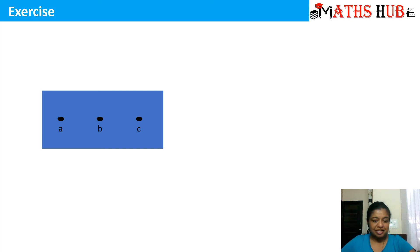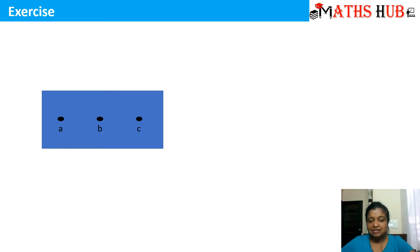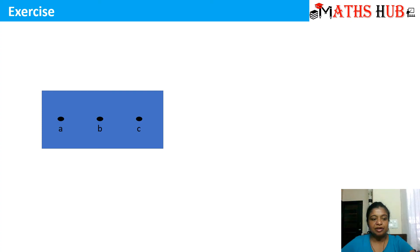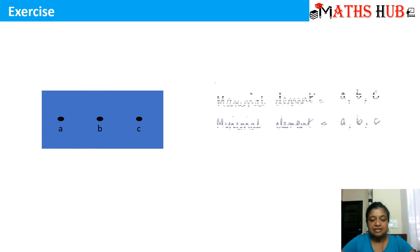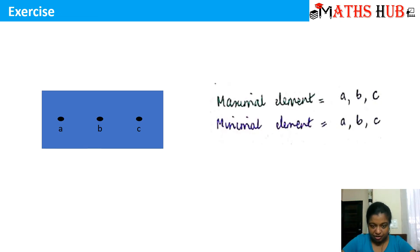This is a very interesting case. There are three dots A, B, and C, and all three are lying at the same level. Nothing is above them, so all three serve as maximal elements. Similarly, nothing is below them, so A, B, and C also serve as minimal elements. For this particular case, all three elements A, B, C serve as both maximal and minimal elements.